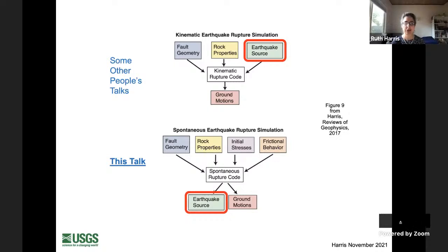Spontaneous earthquake rupture simulations — the method I use, and also used by Alice Gabriel in an earlier talk — are physically self-consistent but require more information. You need fault geometry, rock properties, initial stresses on and off the fault, and how friction works. The earthquake source is a result of the interaction of all these inputs rather than being predetermined, and ground motions are also predicted as an output.